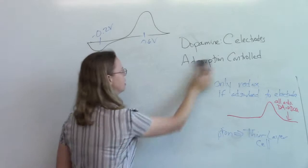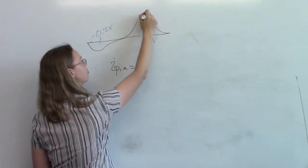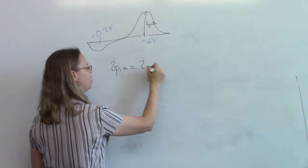Now, I just told you, and I just erased it, that if we did classic thin layer cell theory, that IPA, so the anodic peak, this would be IPA, should equal IPC, which is the cathodic peak, which I've labeled on there.